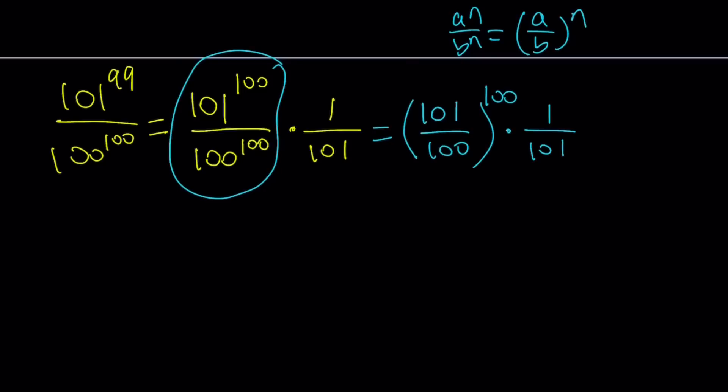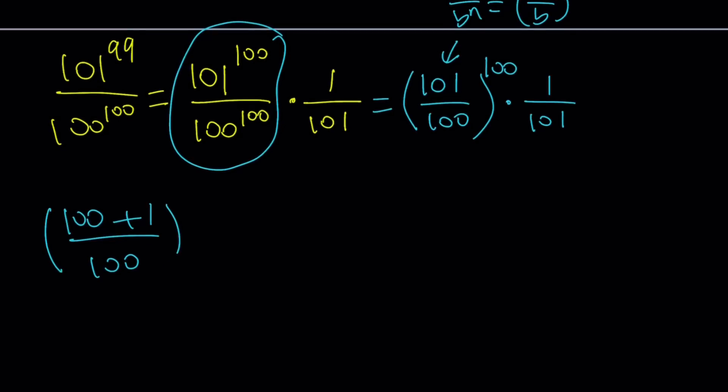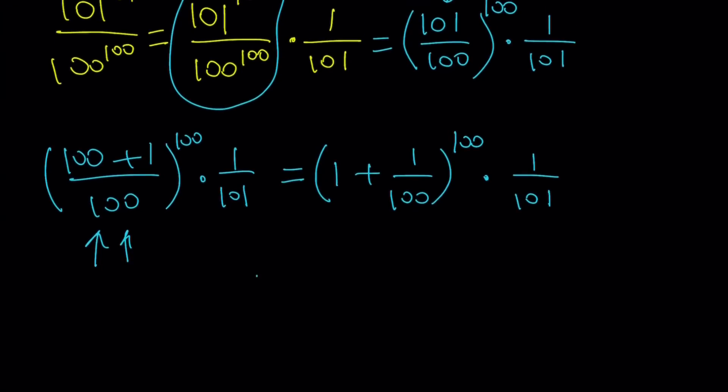Let's go ahead and split up the 101. Let's write it as 100 plus 1 over 100 to the power 100 times 101. And then we can basically split this into two fractions and write it as 1 plus 1 over 100. Hopefully you get to see what I'm doing. And this is what I get.